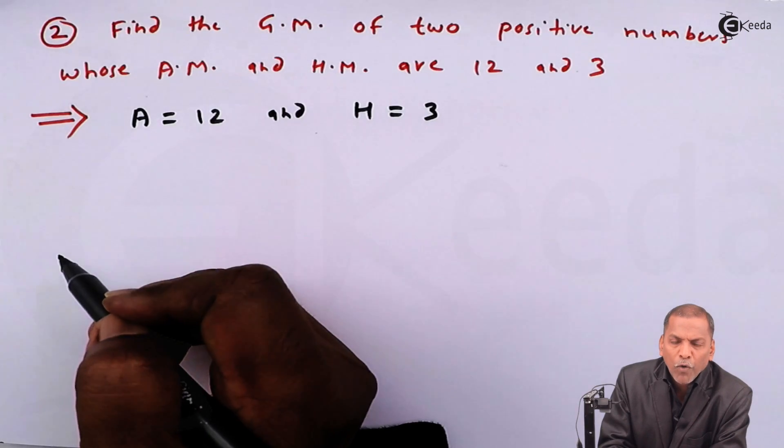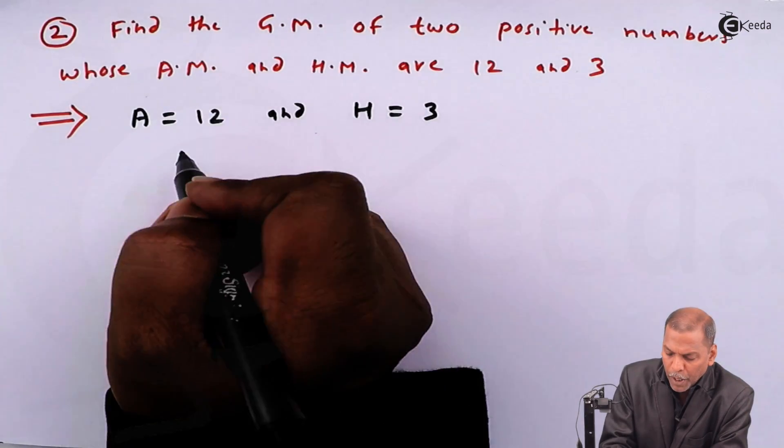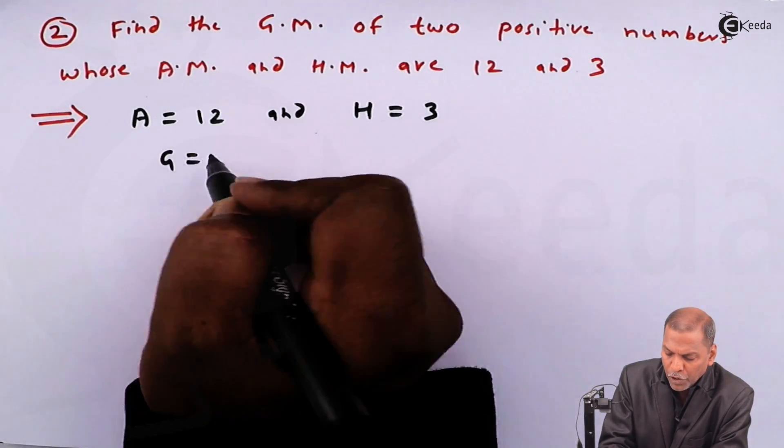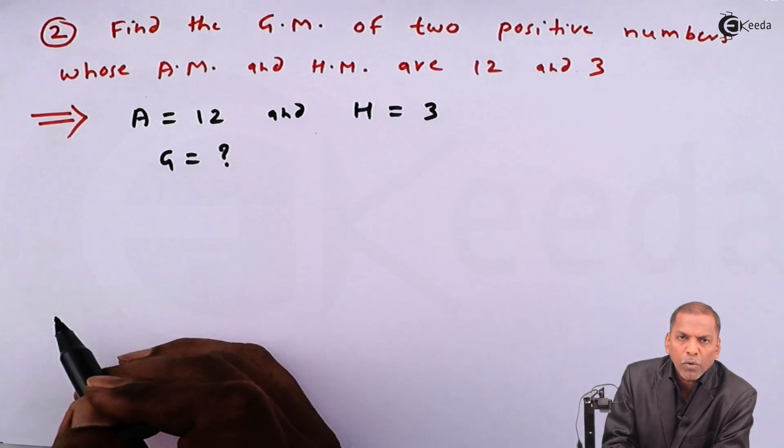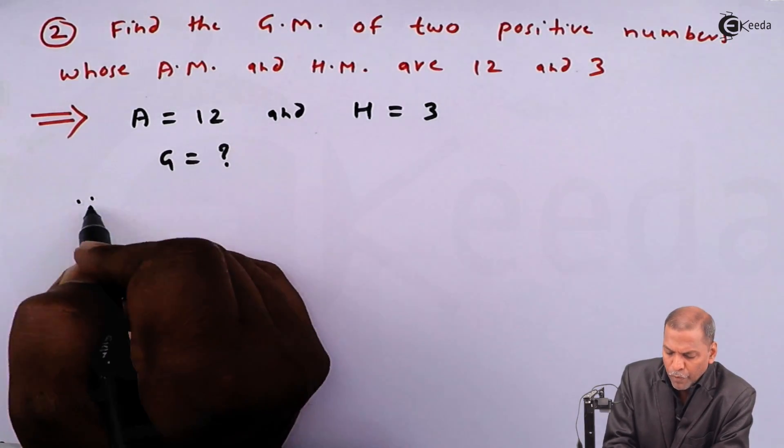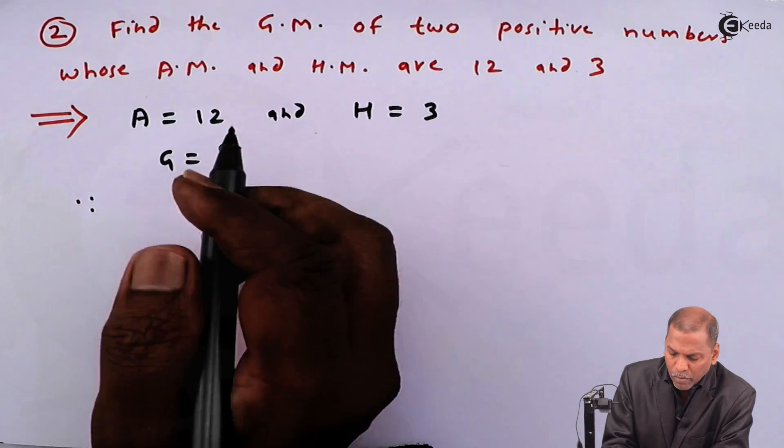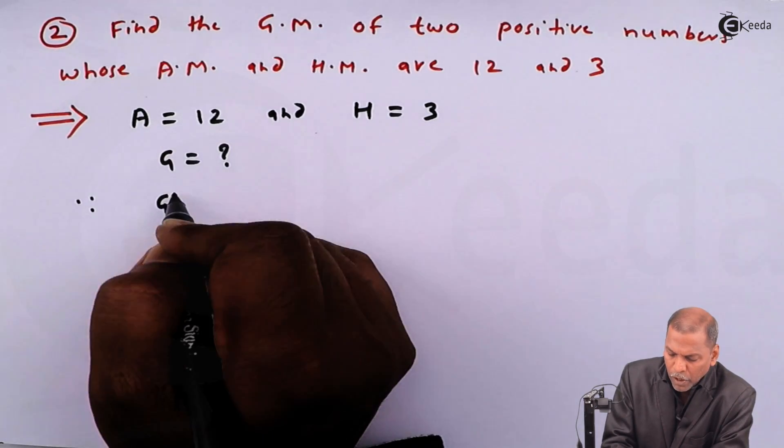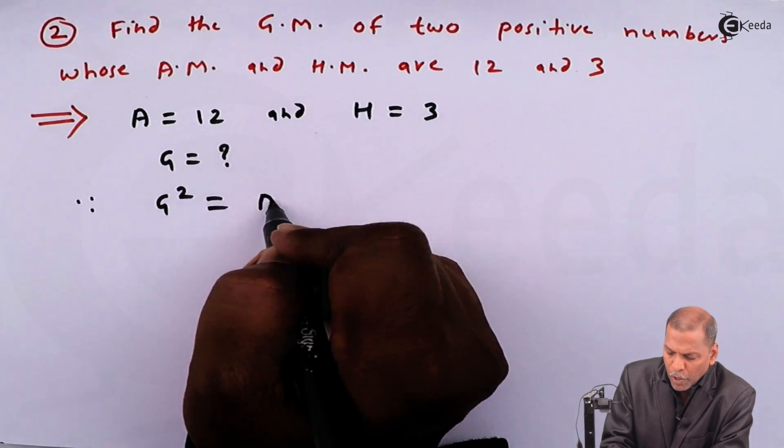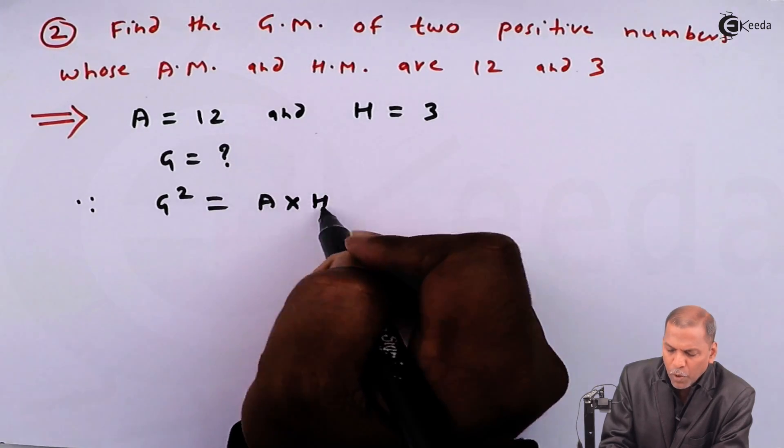And we have to find geometric mean, capital G equals question mark. Now we use the relation or formula between arithmetic mean, geometric mean and harmonic mean, that G squared is equal to A into H.